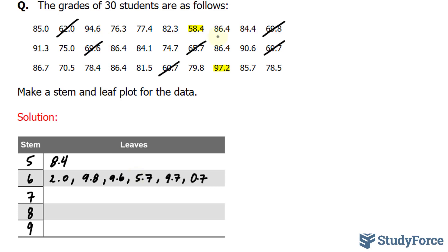Next, we'll analyze the numbers that are in the 70s. We have 76.3, so I'll write down 6.3. Then 77.4. If you do the rest correctly, you should end up with the following.